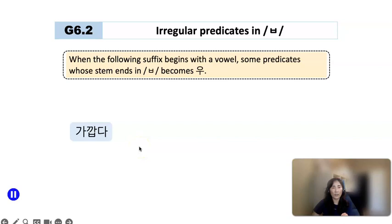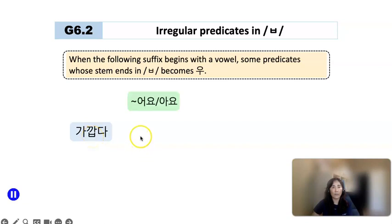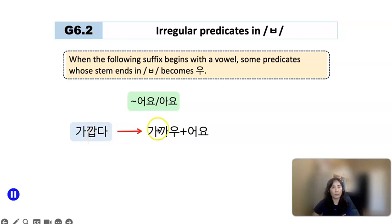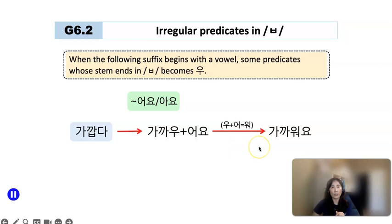Here's an example: 가깝다. Notice that it has ㅂ at the end of the stem. When you conjugate in polite speech style with 어요/아요, ㅂ is removed — you drop 다, of course — and instead you add 우 and attach 어요. This 우 and 어 become one syllable: 워. And eventually you have 가까워요.